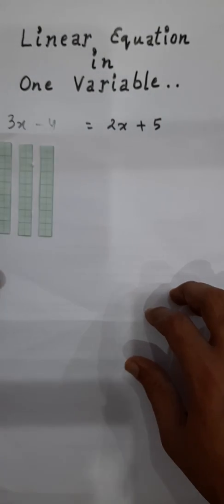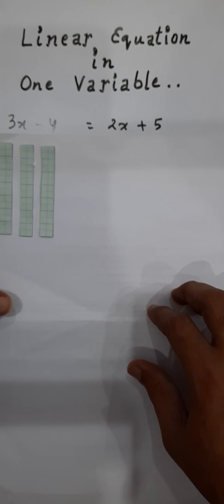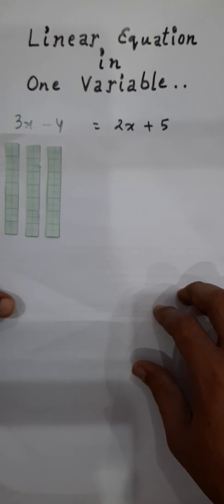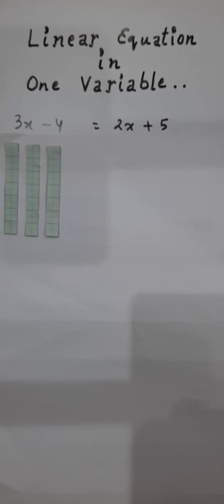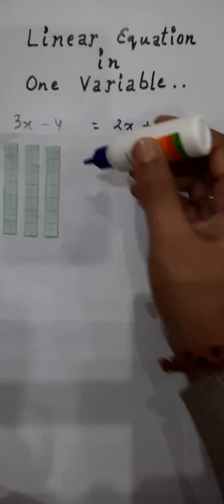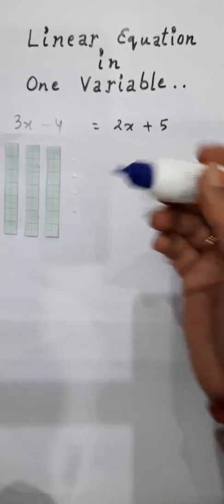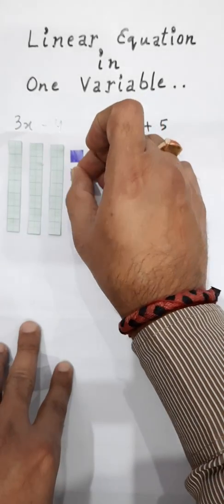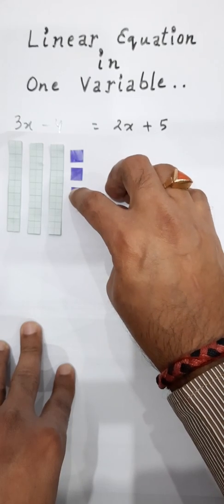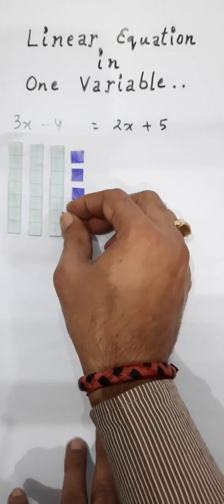Now you are observing that it is minus 4. Since it is minus 4, you require the colored graphs of 1 into 1. You require 4 of them: 1, 2, 3, and 4. I have pasted 1 colored square, then the 2nd, the 3rd one, and then I have pasted the 4th one like this.